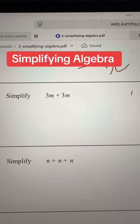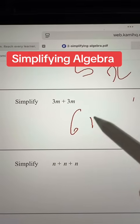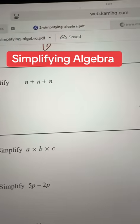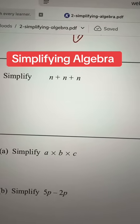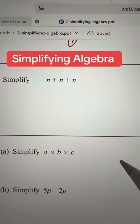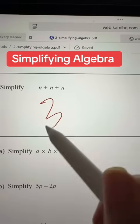The next one is 3m plus 3m, that's 6m. Then you have n plus n plus n plus n. n basically represents 1, n plus n plus n is 3n.